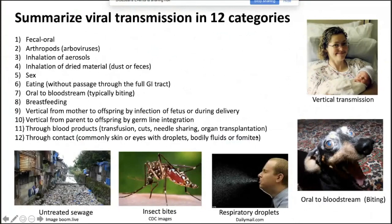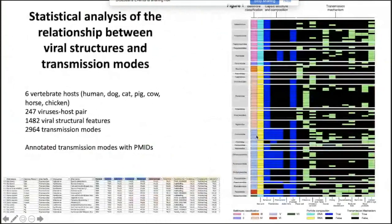We studied viruses from six vertebrate hosts, including humans, dogs, cats, pigs, cows, horses, and chickens — 247 virus-host pairs. That gives us 1,400 viral structural features and 2,964 transmission modes.